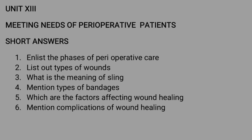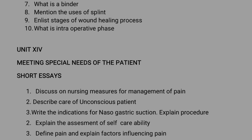Unit number 13: meeting needs of pre-operative patients. Short essay: list the phases of peri-operative care. List out types of wounds. What is the meaning of slings? Mention types of bandages.